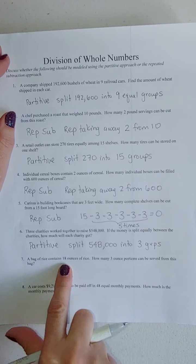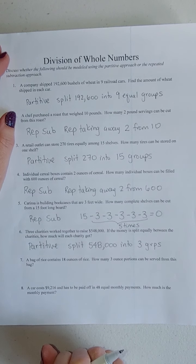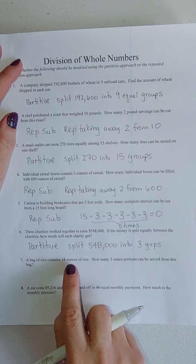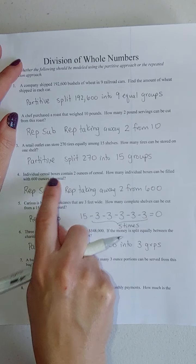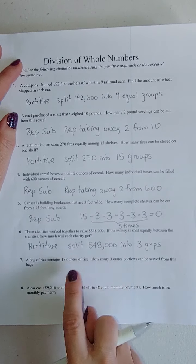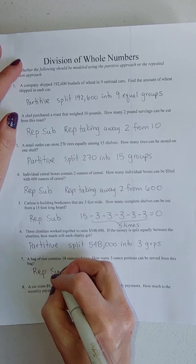A bag of rice contains 18 ounces of rice. How many three-ounce portions can be served from this bag? This one's very similar to the cereal, because we are taking out three ounces at a time. This one's repeated subtraction.